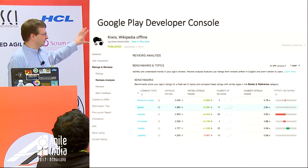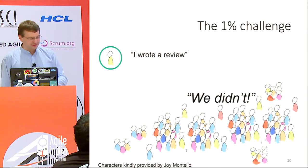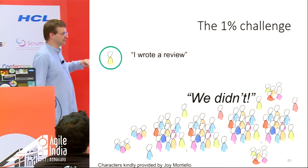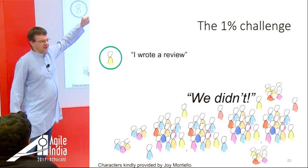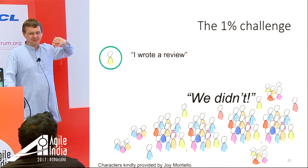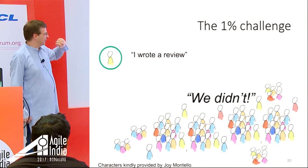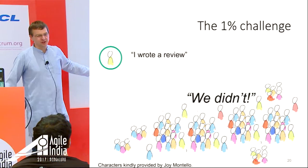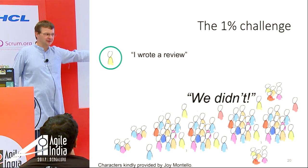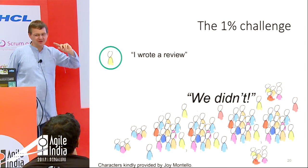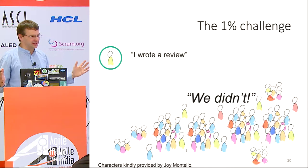Here's the real problem: roughly 1% of users write reviews, and they write them because they're pissed off or because they're happy. What about the other 99% who didn't provide feedback? Does the 1% represent the 99%? Probably not. We need to think: is there anything else we can use that might help us understand the 99%?